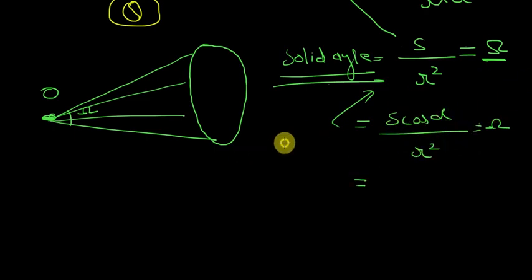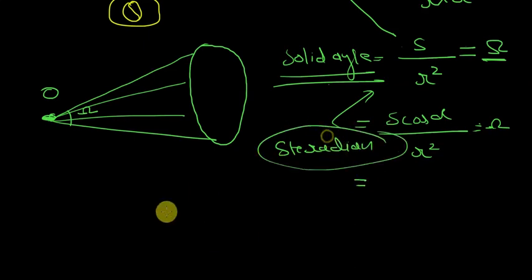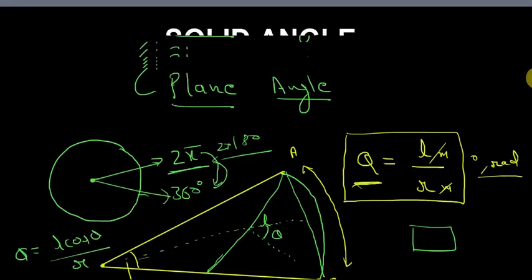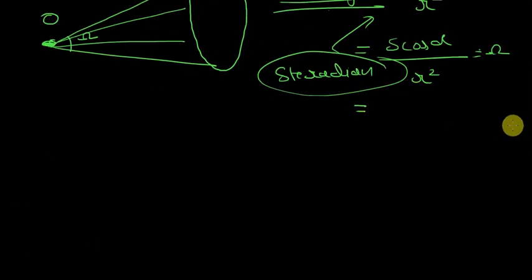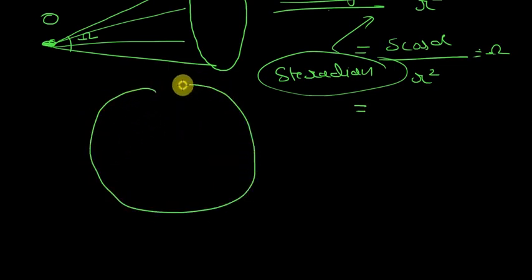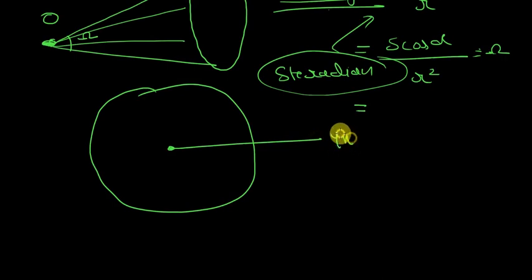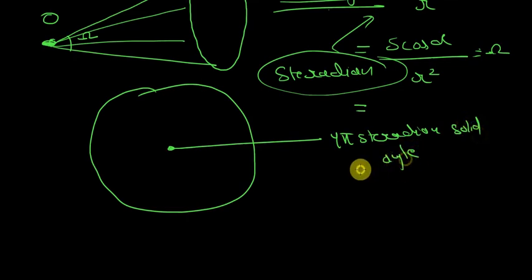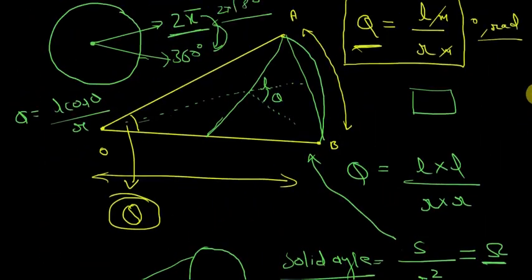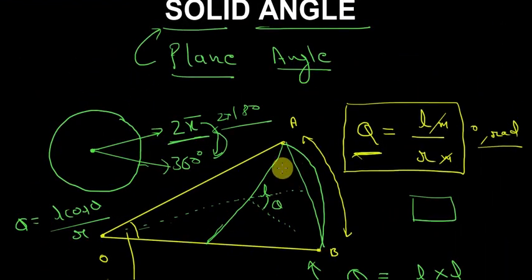The unit of the solid angle is the steradian. We also define that a sphere subtends a solid angle of 4π steradians — because the sphere is the surface version of a circle, and the surface area of a sphere is 4πR².